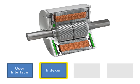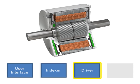The indexer converts the data input from the user interface to motion signals that the motor will turn to a defined position and speed. The driver then takes the data from the indexer and provides current pulses to the motor. The number of steps the motor turns is equal to the number of pulses transmitted to the driver.